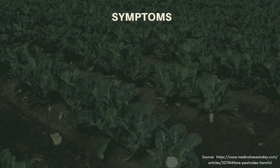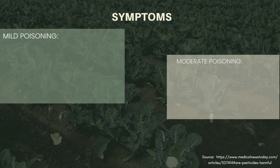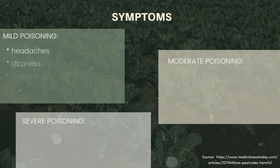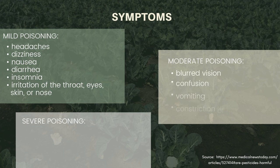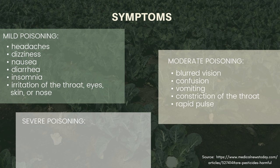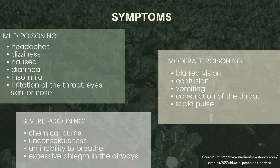There are three types of pesticide poisoning: mild, moderate, and severe. For mild poisoning, symptoms include headaches, dizziness, nausea, diarrhea, insomnia, and irritation of the throat, eyes, skin, or nose. For moderate poisoning, symptoms include blurred vision, confusion, vomiting, constriction of the throat, and rapid pulse. For severe poisoning, symptoms include chemical burns, unconsciousness, inability to breathe, and excessive phlegm in the airways.